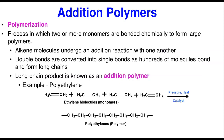Let's start with addition polymers. Before we understand what an addition polymer is, let's talk about polymerization. Polymerization is a process in which two or more monomers — monomers are the simple units — bond chemically to form large ones. The large ones are what we call polymers, the big large molecules made up of repeating units of the monomers. Alkene molecules undergo addition polymerization with one another.